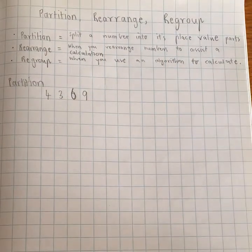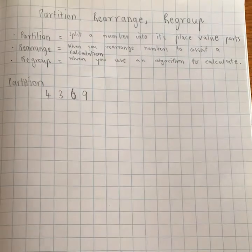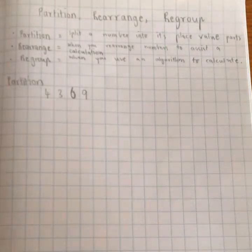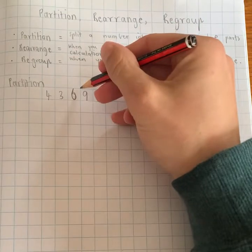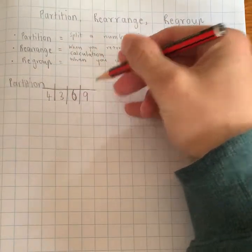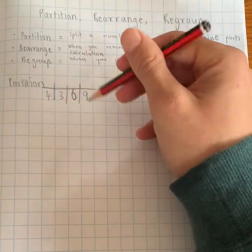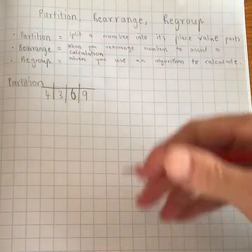So when we partition a number, what we're thinking about is what place value parts is the number in? So we know that, and I always like to draw this little table to help, we know that each number's got its own place value. So depending on where the number falls, gives it a value.